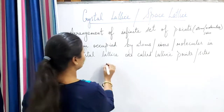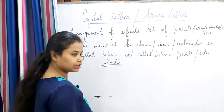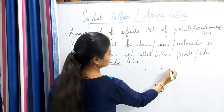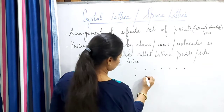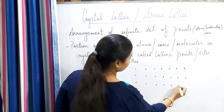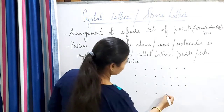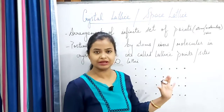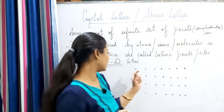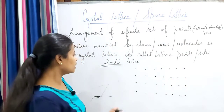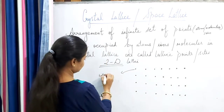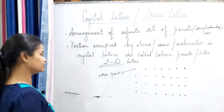I'll show you with one example. I'm drawing a two-dimensional lattice here. I am arranging these points — the space can vary a little bit but they will have an appropriate orderly arrangement. Points means the constituent particles — atoms, molecules or ions — they are arranged in a specific manner. These points themselves are known as the lattice points, or we say lattice points or lattice sites.